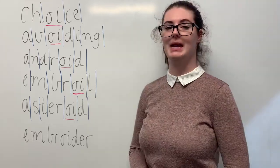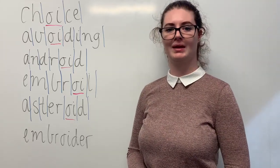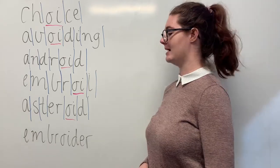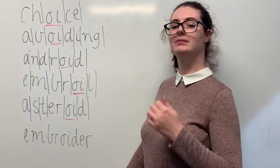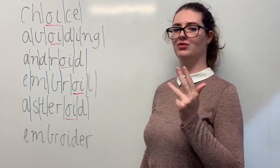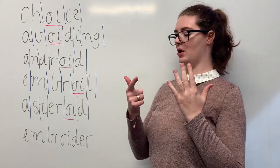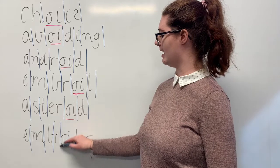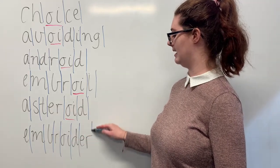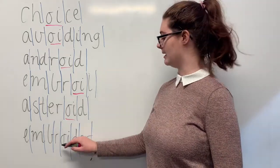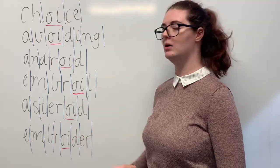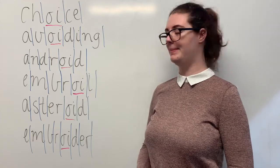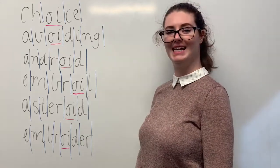And our last word is embroider. Say embroider. My mum had to embroider my name on my apron. The sounds in embroider are, together, e, m, b, r, oi, d, e, r. The part that we need to remember is the oi digraph making the oi sound. Can you teach it to me? Embroider: e, m, b, r, oi, d, e, r.